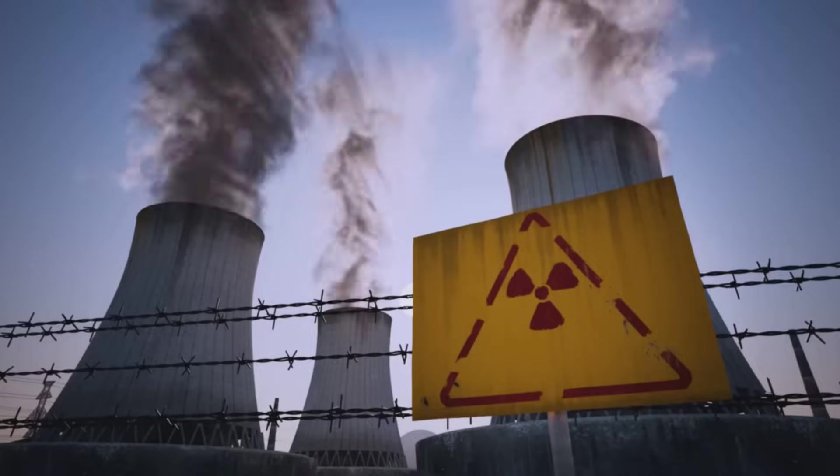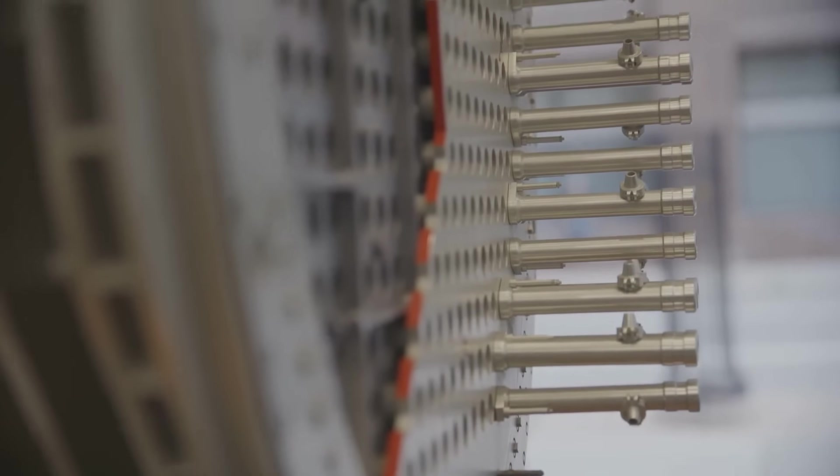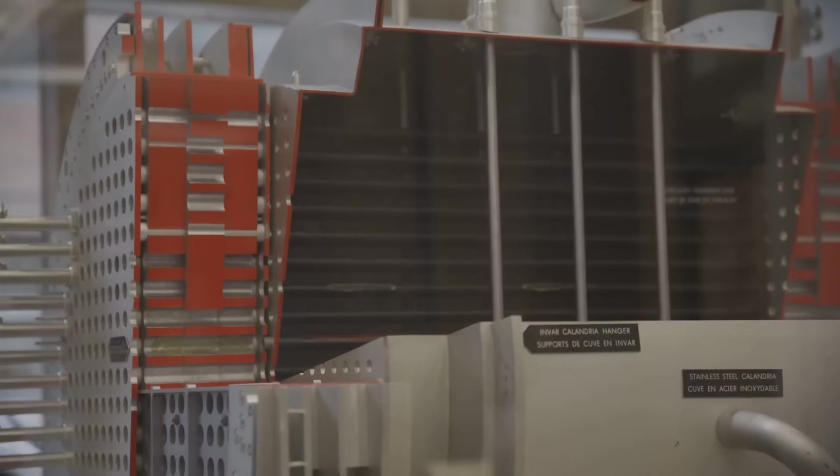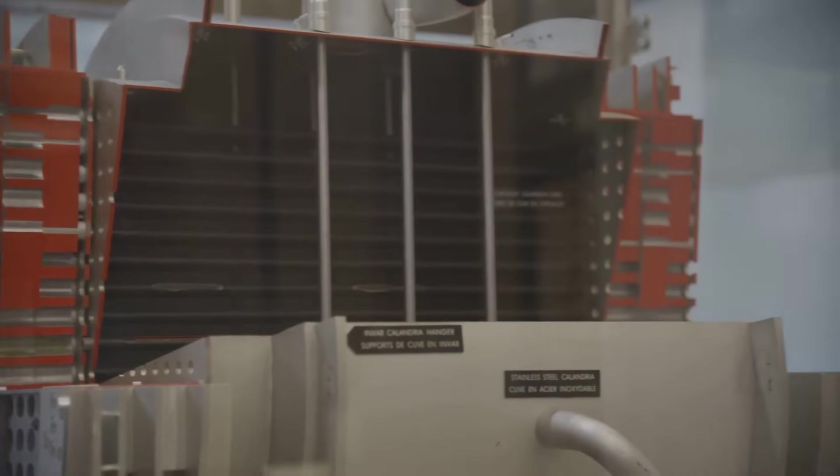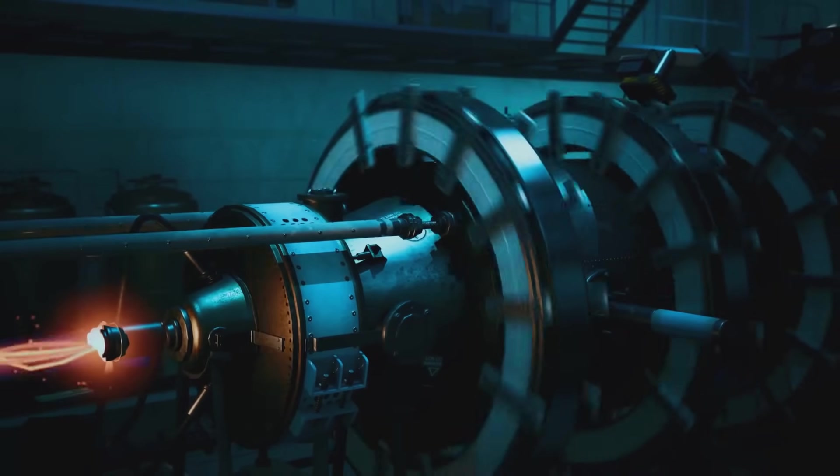For a chain reaction to work, you need enough uranium packed together. This is called critical mass. If the uranium is too spread out, neutrons escape and the reaction fizzles. Critical mass means there are enough atoms close together so neutrons keep hitting new nuclei, sustaining the reaction.